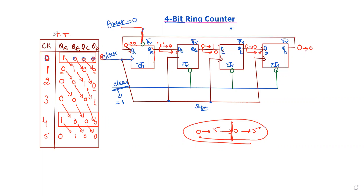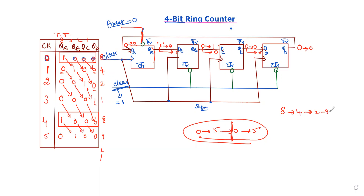Let's check the sequence: 8, 4, 2, 1. Next time: 4. Next time: 2. Next time: 1. Then we repeat the sequence. So the sequence for the 4-bit ring counter is 8, 4, 2, 1.